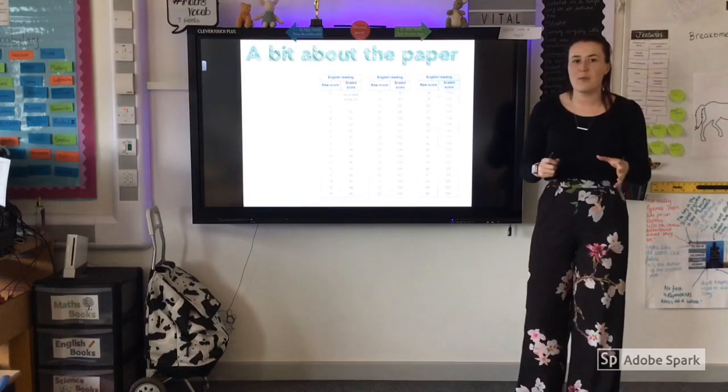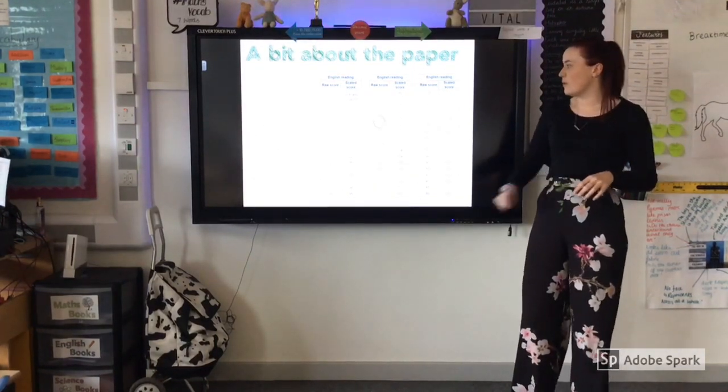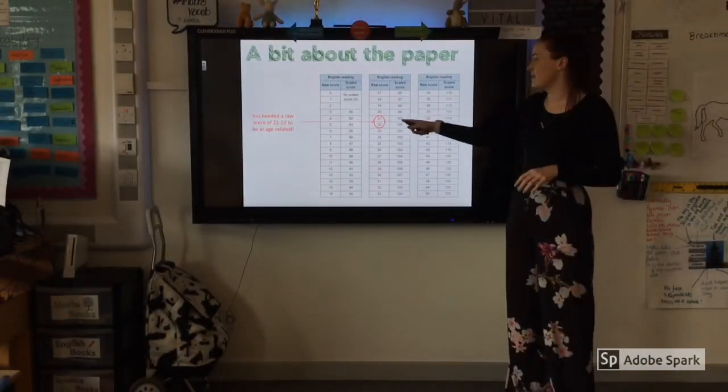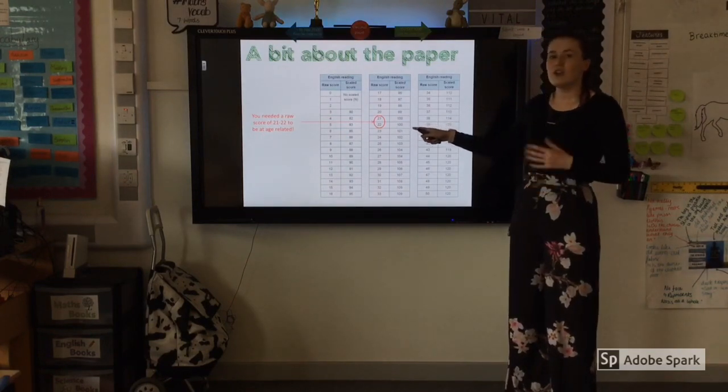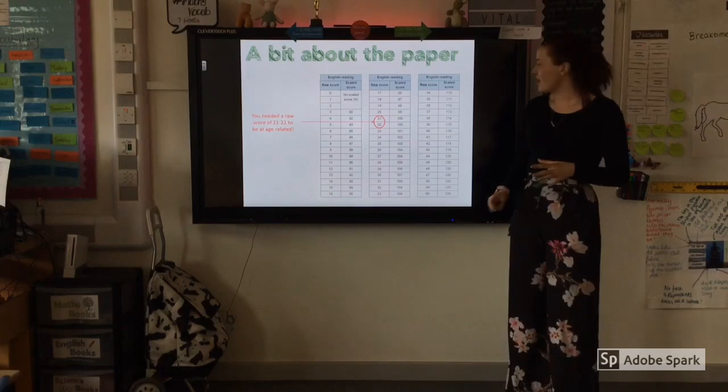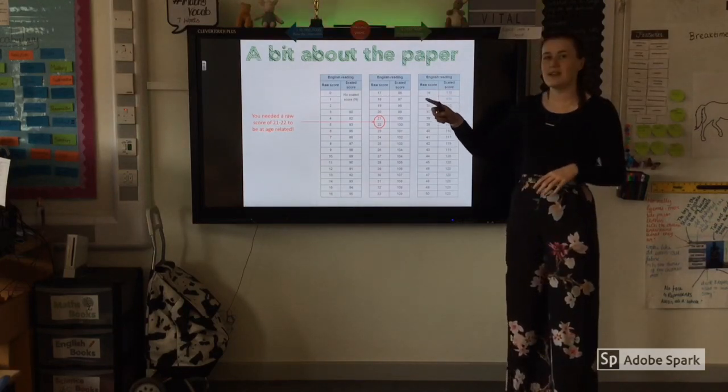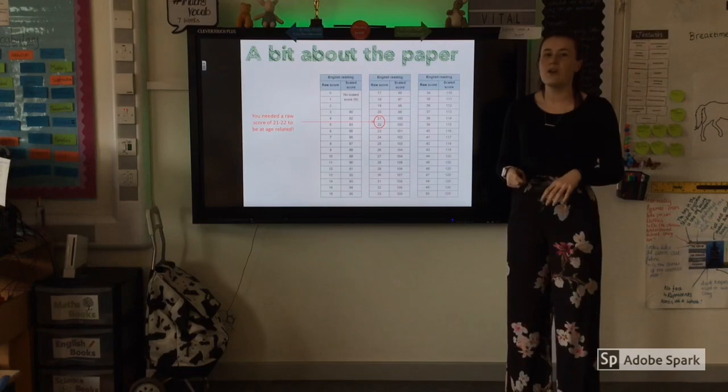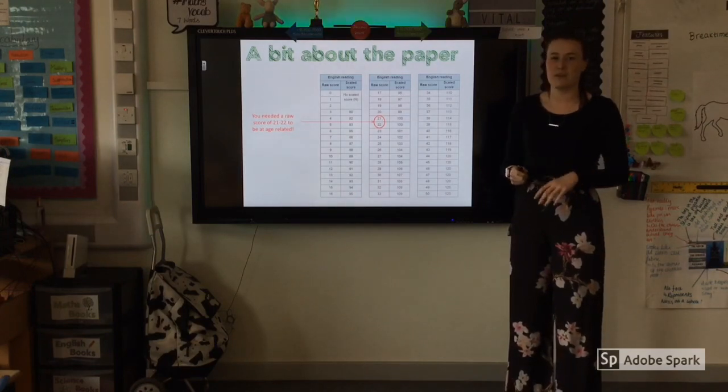So thinking a bit about the paper, you have to look at your standardized score. In order to get a standardized score of 100, you're looking to get roughly 21, 22 marks. Anything around 34 and above is a standardized score of 110, which is what you think is greater depth.